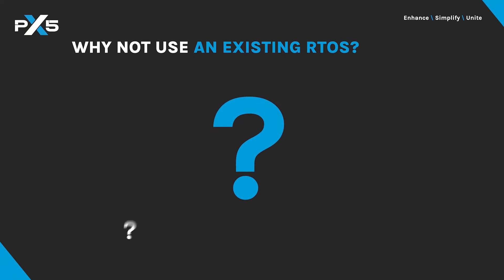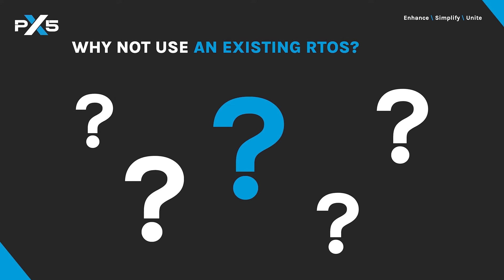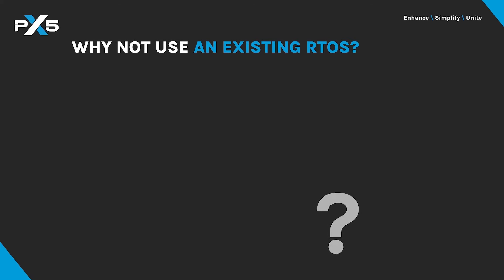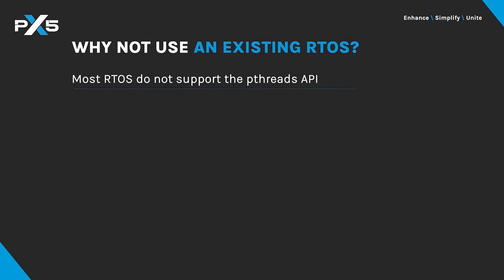Today's embedded industry offers many fine RTOS solutions that solve the performance, code size, support, and legal issues. Many are used in embedded devices that require high performance and small size. So why not use one of those? Because most, if not all, do not support the POSIX PThreads API in a native form. Most have their own proprietary API — some good, some not so good — but none are compatible with PThreads.